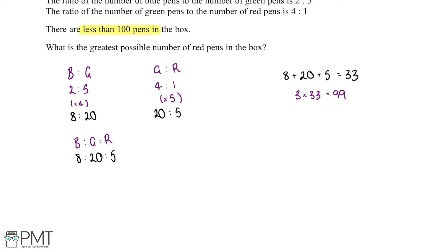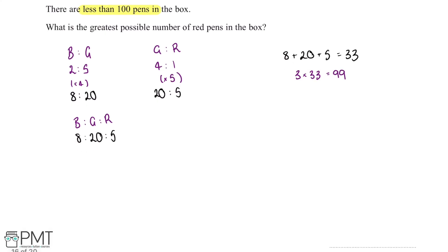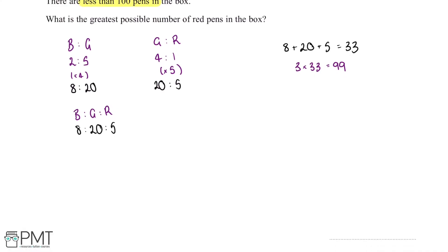So what this tells us is that 3 lots of this ratio will fit into the box, so what we need to do is multiply this ratio by 3. So 8 multiplied by 3 is 24, 20 multiplied by 3 is 60, and then 5 multiplied by 3 is 15.